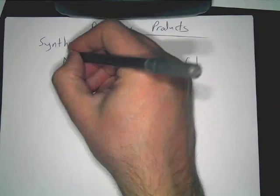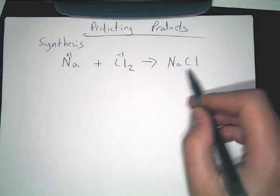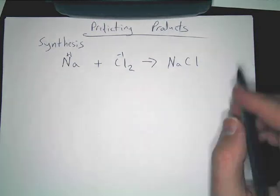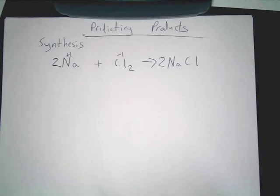And if you think about this, sodium is plus one, chlorine is negative one. So that formula is correct. Now, what do I have to do to balance it? Put a two there. Put a two there.